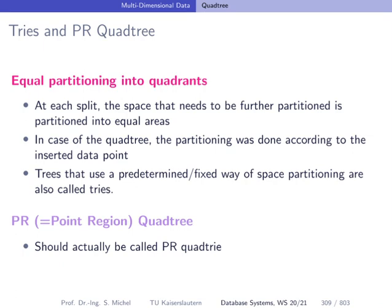The main principle behind the quadtree was that a data point partitions the space into four quadrants. The PR quadtree — the Point Region quadtree — is different: it partitions the space into predefined equal areas, recursively as the tree grows. Trees that use a predetermined or fixed way of space partitioning are also called tries, so in this sense the quadtree we see now should actually be called the PR quadtree.